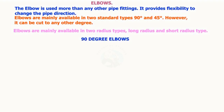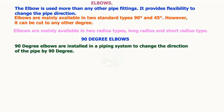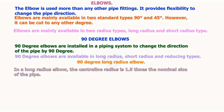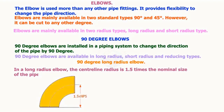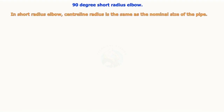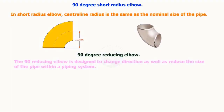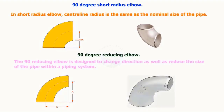90-degree elbows are installed in a piping system to change the direction of the pipe by 90 degrees. 90-degree elbows are available in long radius, short radius, and reducing types. In a long radius elbow, the centerline radius is 1.5 times the nominal size of the pipe. The 90-degree reducing elbow is designed to change direction as well as reduce the size of the pipe within a piping system.